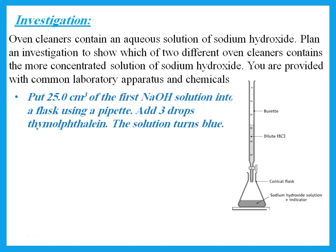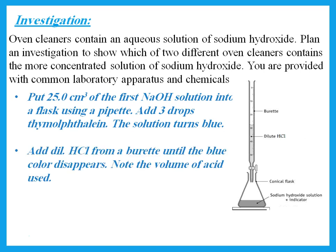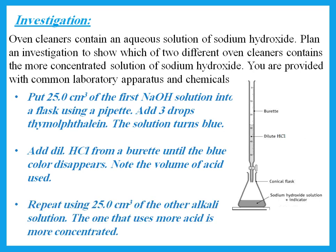Put 25 cm³ of the first sodium hydroxide solution into a flask using a pipette. Add three drops of thymolphthalein — a new addition to the 2023 syllabus. Adding thymolphthalein to sodium hydroxide turns the solution blue. Then add dilute HCl from the burette until the blue color disappears. Note the volume of acid used. Repeat using 25 cm³ of the other alkali. The one that uses more acid is more concentrated.